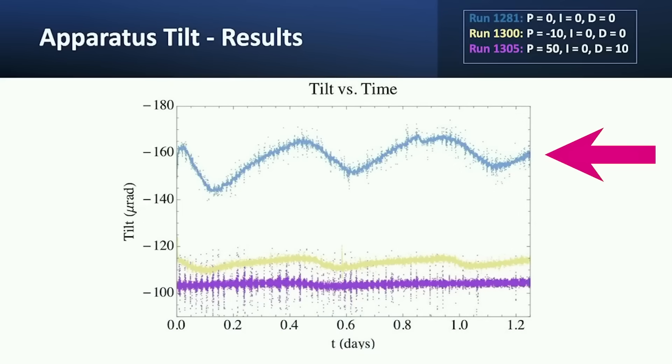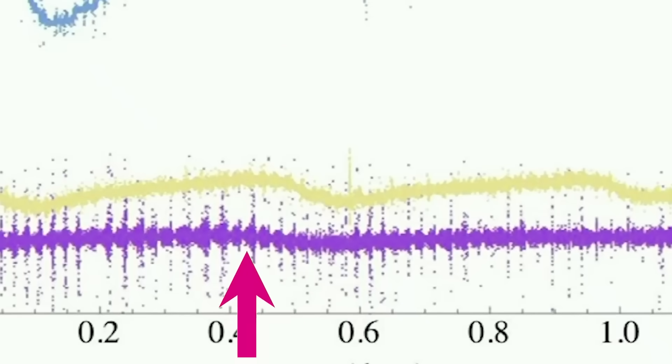You see the very first runs shown at the top with no components of proportional integral derivative included, and then the final term which has the lowest variation, the lowest oscillatory behavior over 1.2 days worth of data.